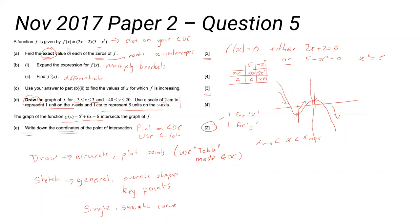How do we get the exact values? Well, we know that f(x) has to be zero. When f(x) is zero, either 2x plus 2 is zero or 5 minus x squared is zero. When you multiply two numbers together to get zero, one of them must be zero. If they're both non-zero, the answer won't be zero.